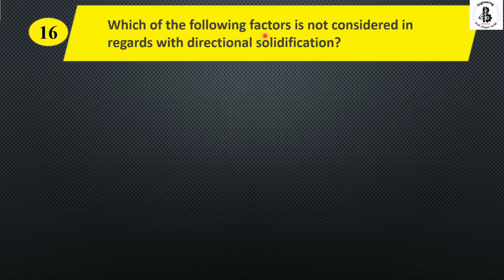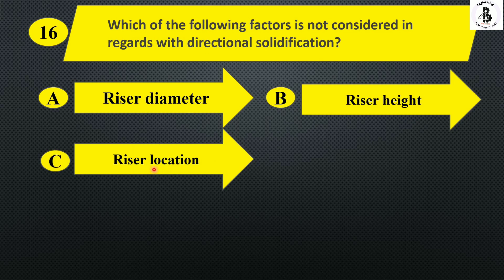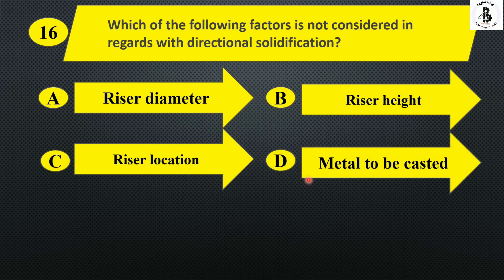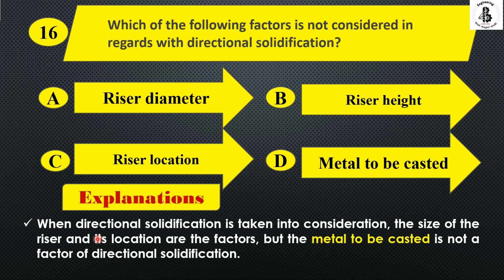Next: which of the following factors is not considered in directional solidification? Option A riser diameter, option B riser height, option C riser location, and option D metal to be cast. Basically, when directional solidification is considered, the size and location of the riser are the factors. However, the metal to be cast is not a factor of directional solidification. So the right answer is option D, metal to be cast.